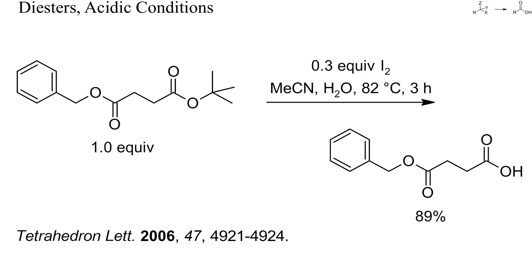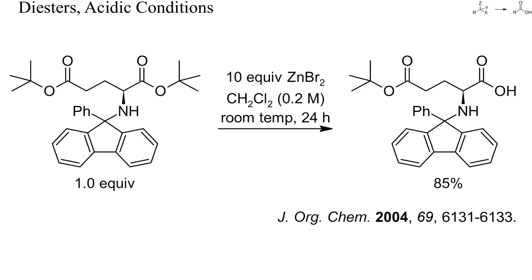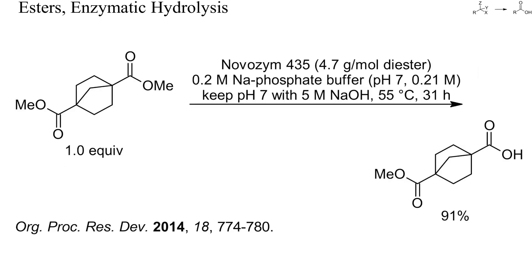Another mild Lewis acid suitable for selective ester cleavage is iodine. Here, a tert-butyl ester could be hydrolyzed selectively in the presence of a benzyl ester. Similarly, zinc bromide can catalyze the selective cleavage of tert-butyl esters under mild conditions. Here, a protected di-tert-butylglutamate was saponified only once, just by stirring with zinc bromide in dichloromethane at room temperature. This diester would be difficult to monosaponify with sodium hydroxide, because both esters are electronically isolated from each other.